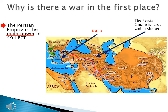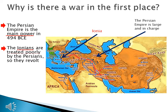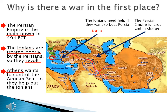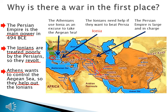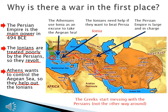The Persians are also in charge of an area called Ionia, which is on the east coast of the Aegean Sea. The Ionians are treated poorly by the Persians, so they revolt. But the Ionians need help if they want to beat Persia — that's where Greece comes in. Athens wants to control the Aegean Sea, so they help out the Ionians. In other words, the Athenians use Ionia as an excuse to take the Aegean Sea. Unlike Hollywood's version, the Greeks start messing with the Persians — not the other way around.